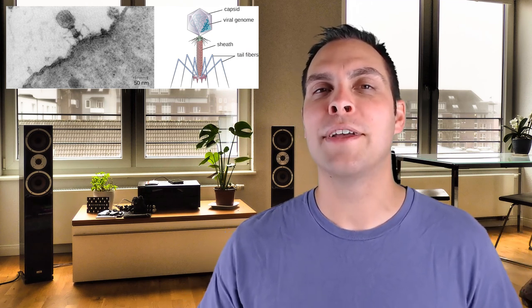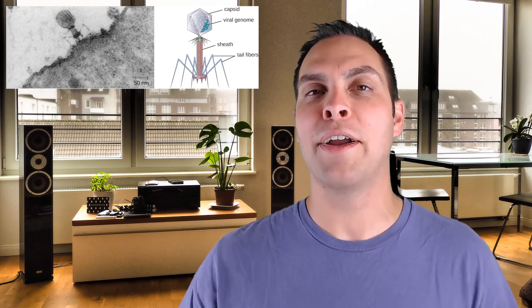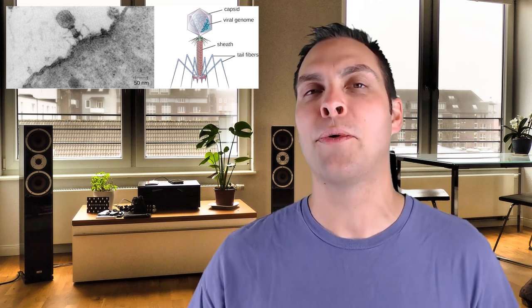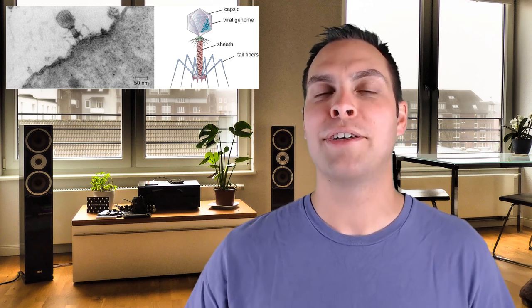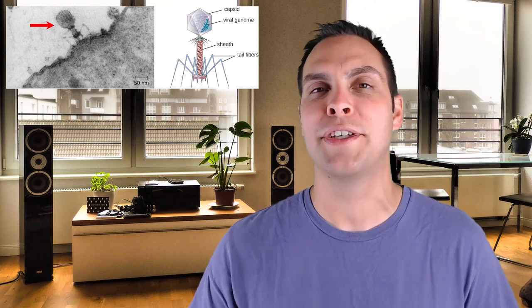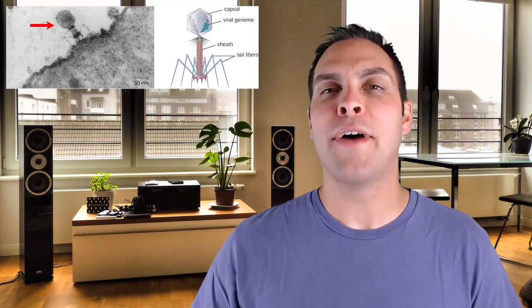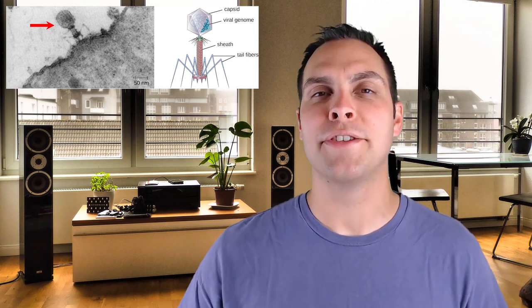Bacteriophages always exist in the tailed bacteriophage form — looking a bit like the moon lander. When a bacteriophage recognizes a specific protein on its host cell's surface, it lands and an injector literally injects the genome into the cell. The remaining portion of that bacteriophage stays on the outside and is called a ghost — you can actually see dozens or hundreds of these collect on the host cell. Once inside, the virus undergoes replication and then lysis, which is the lytic phase: reproduction, multiplication, and destroying the cell.